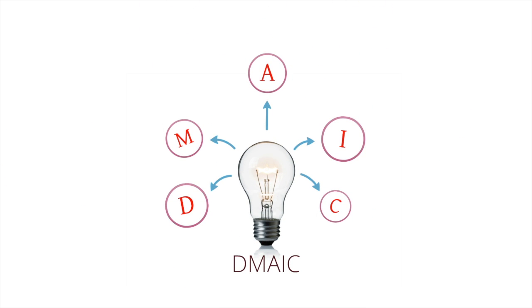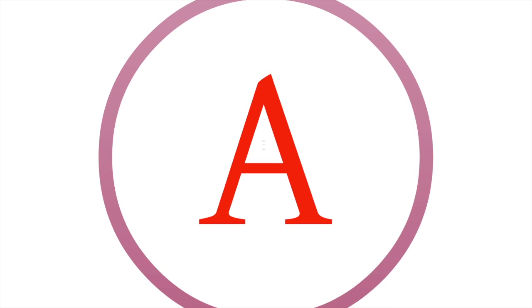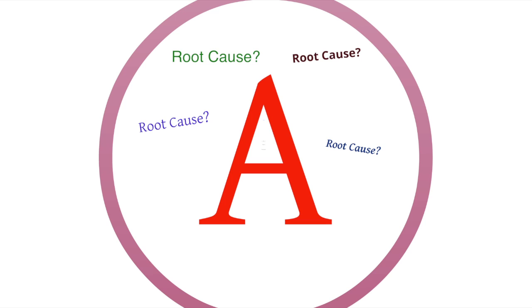The A phase in the DMAIC methodology stands for Analyze. The main goal of the analyze phase is to identify and verify the root cause or causes of a problem in a process. This phase can also be used to identify smaller issues that could be improved.